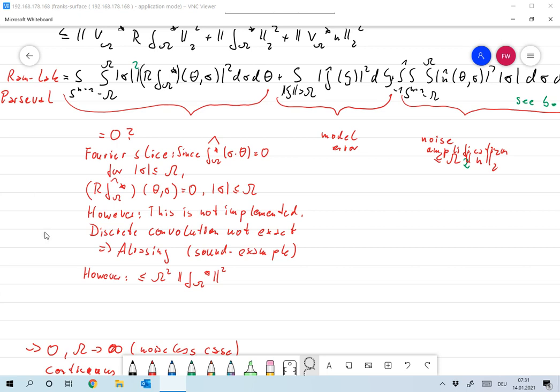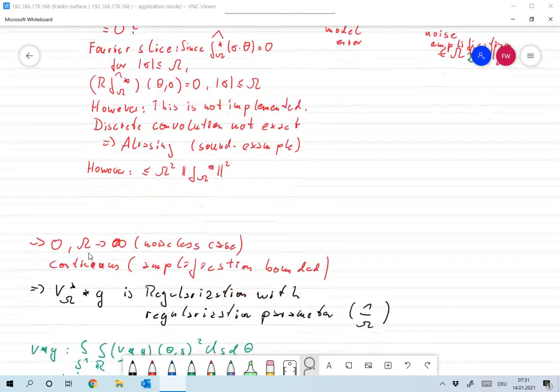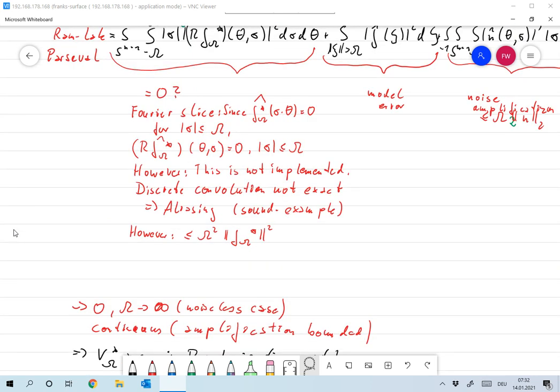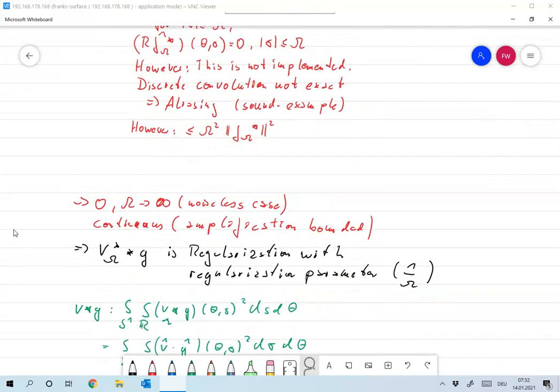Finally, we have that for omega to infinity in the noiseless case this goes to zero, and also the amplification is bounded, which means that each of the single regularization operators for each fixed omega is continuous.